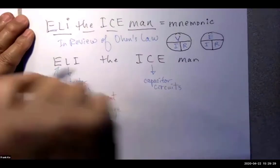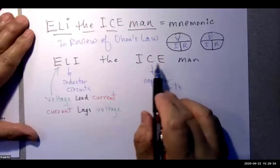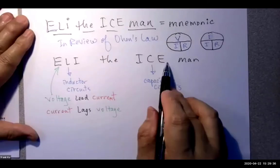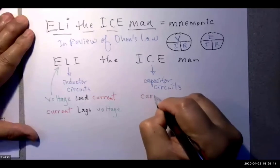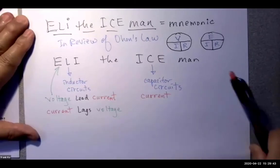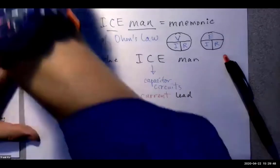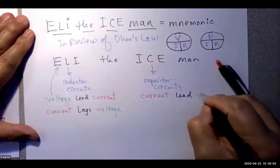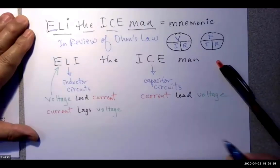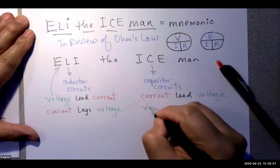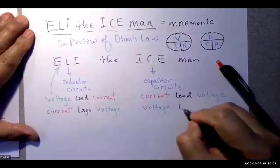Over here, since the I is at the beginning of the word ice, and it is in front of before the E, before the voltage, you would say current will lead voltage. Conversely, you could say voltage lags.